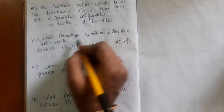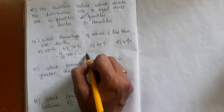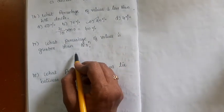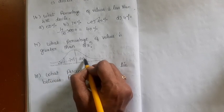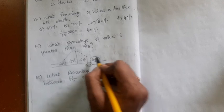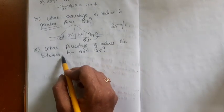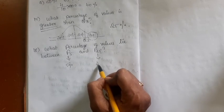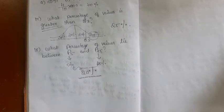What percentage of values is less than the 4th decile? D4 covers 4/10 = 40%. What percentage of values is greater than Q3? Q3 covers 75%, so 25% of values are greater than Q3. What percentage of values lie between P5 and P25? P5 covers 5% and P25 covers 25%, so 20% of values lie between them.